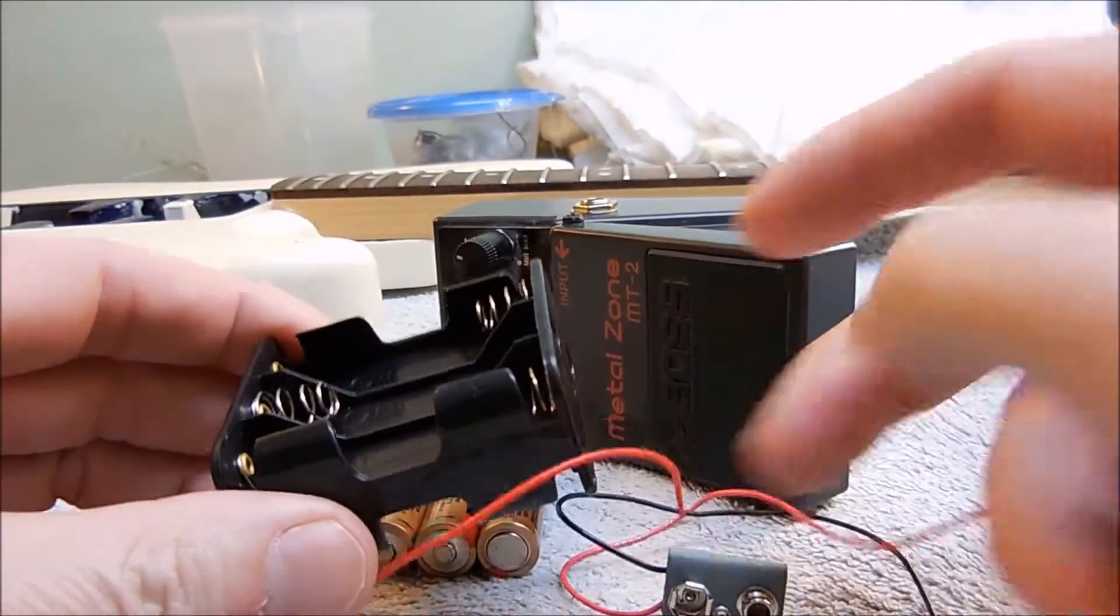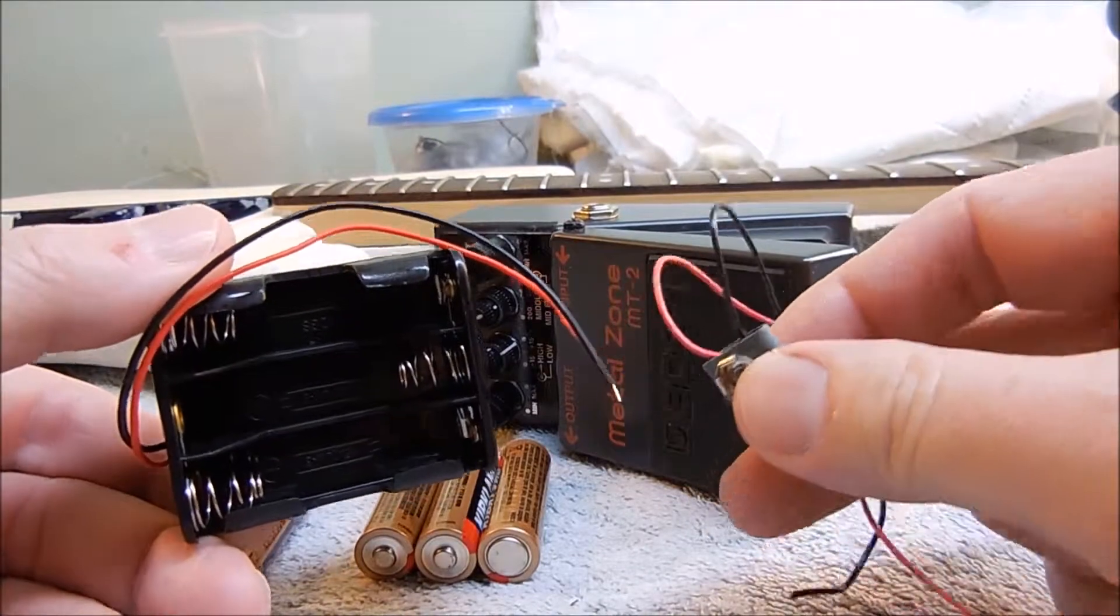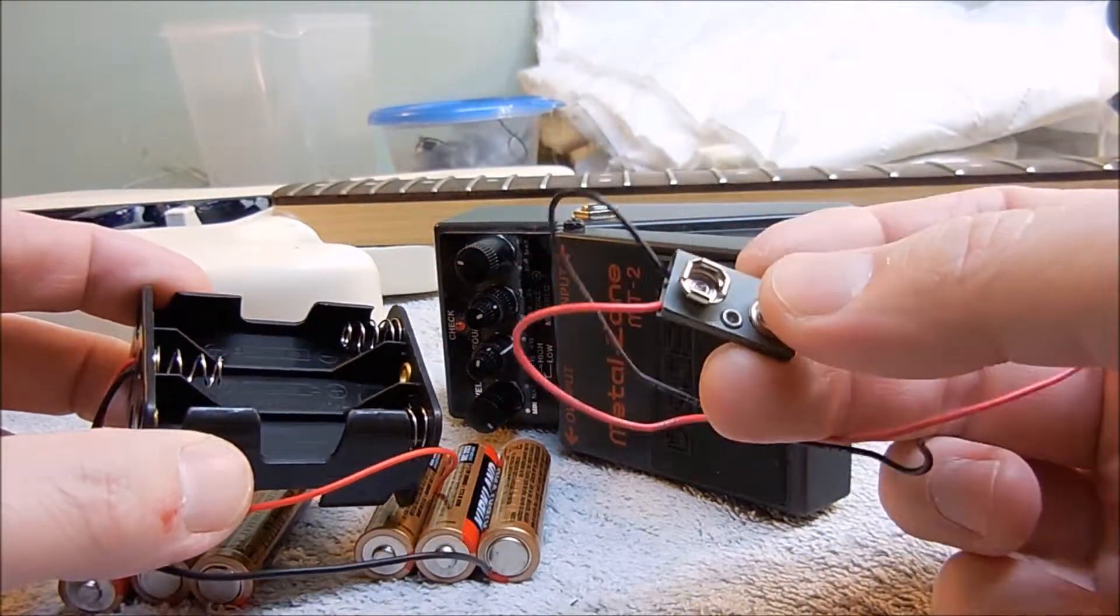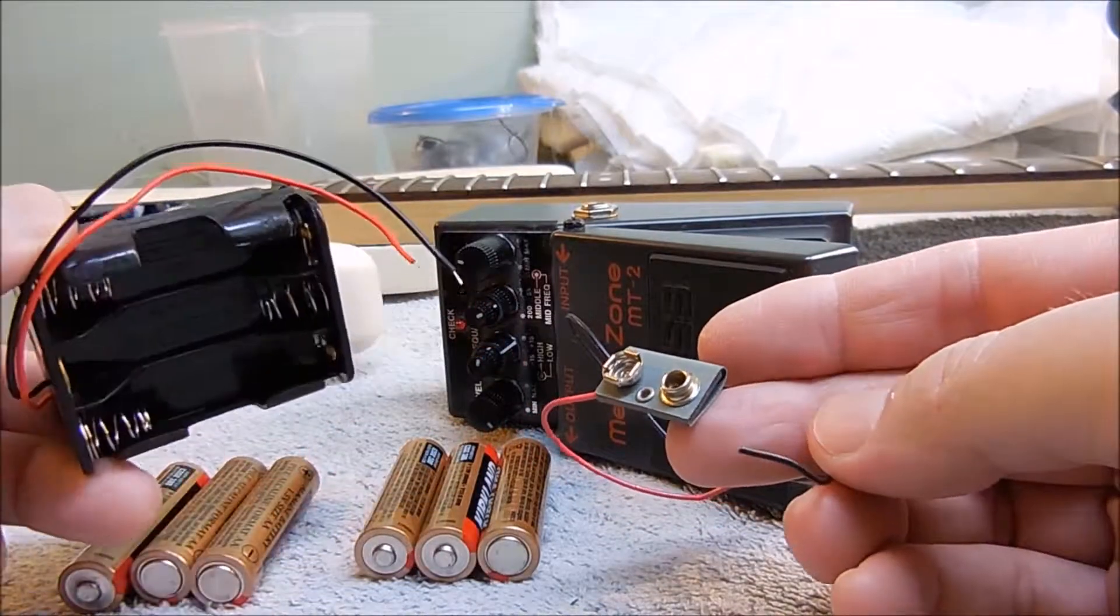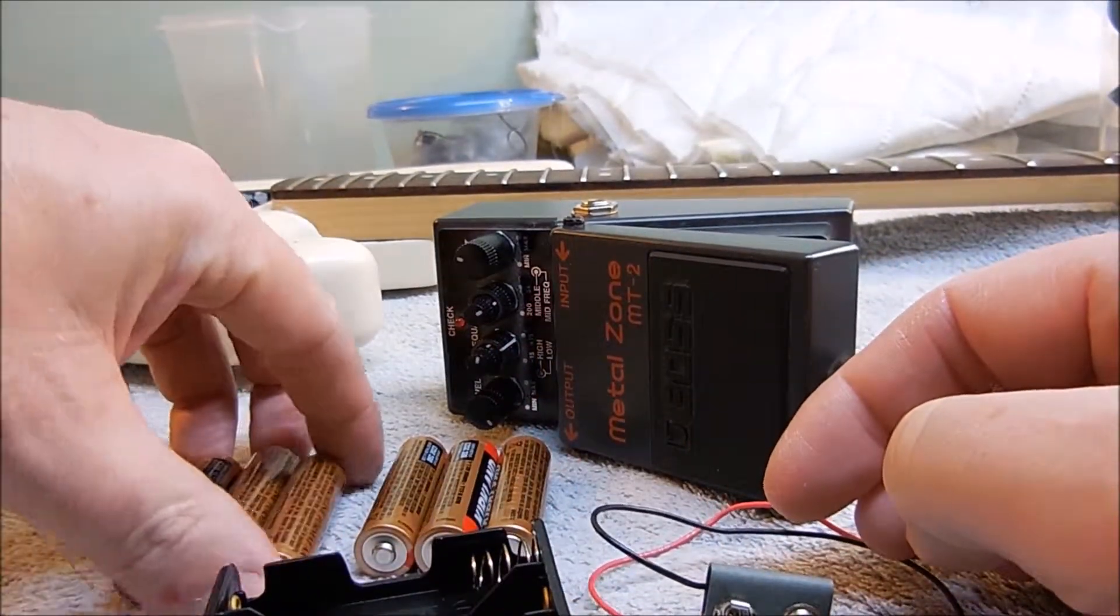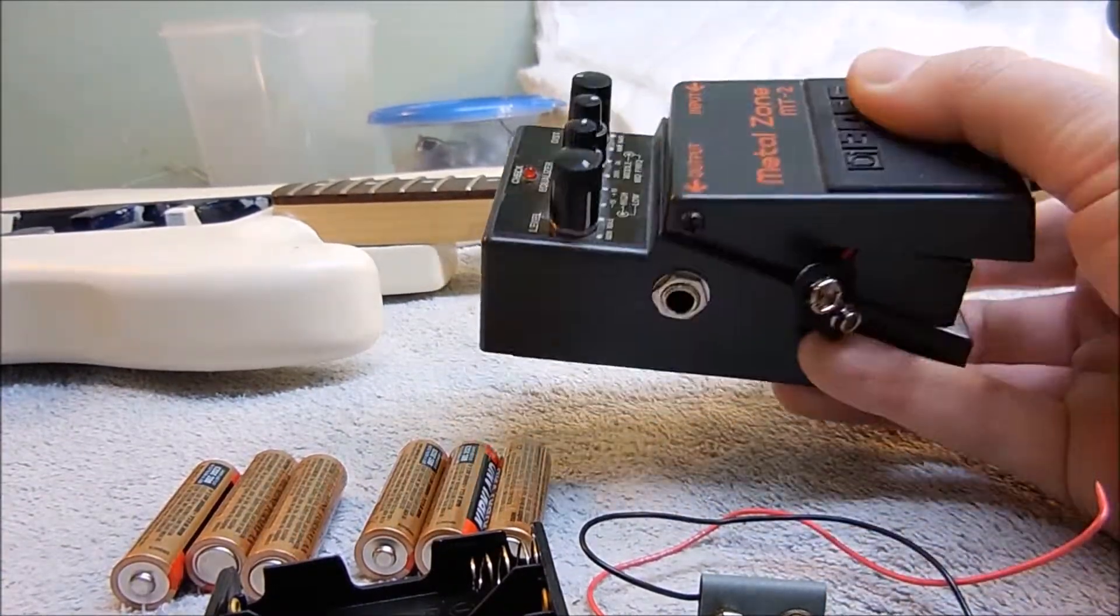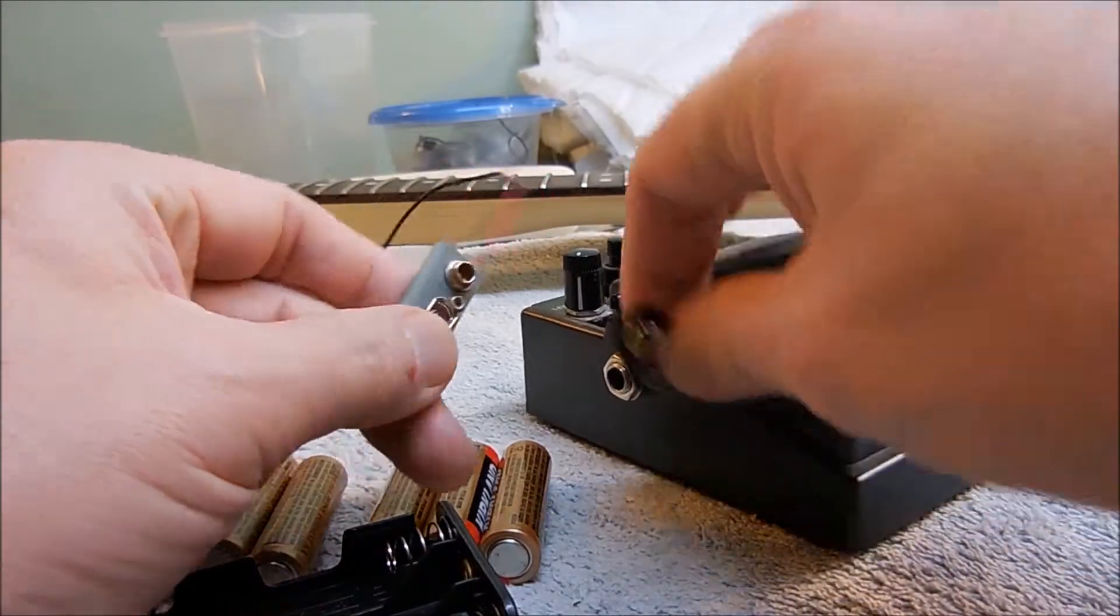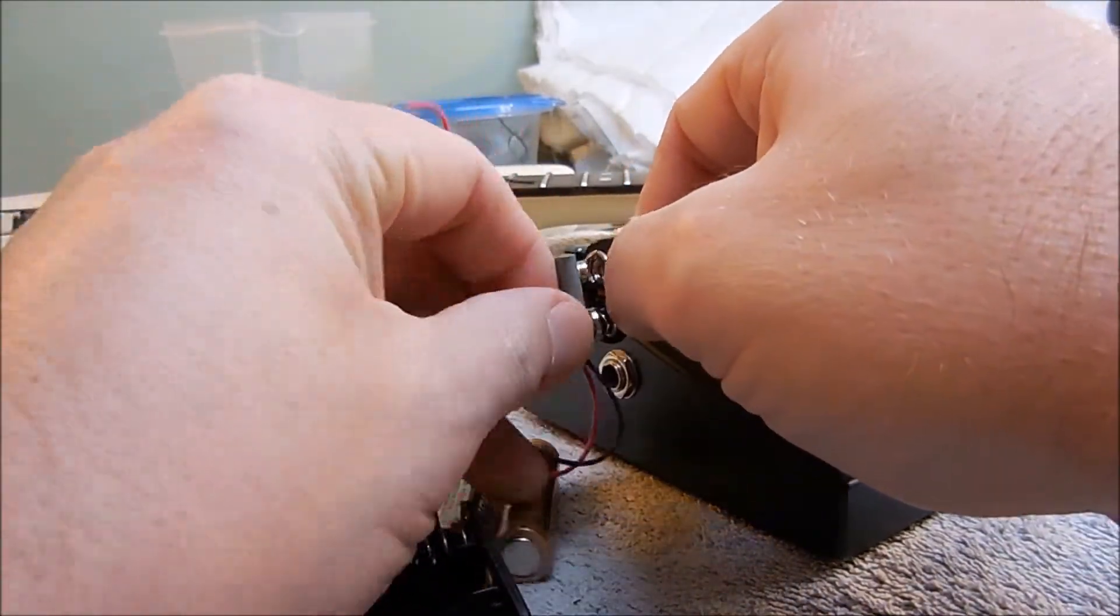Bought this off eBay, I think about 12 of them for about $5 and this about 12 of them for $1.50. And I'm going to put them together so I can run 9 volts with AA batteries to my pedal or whatever pedal I want and just clip these together like so.